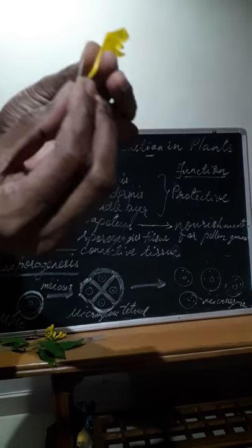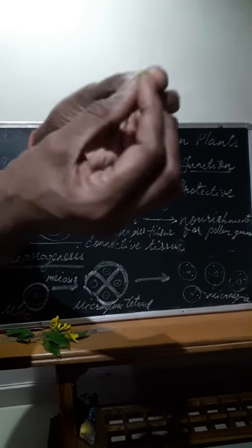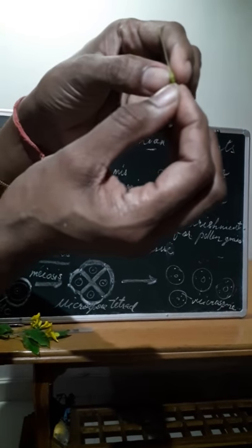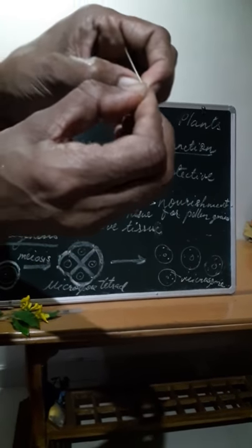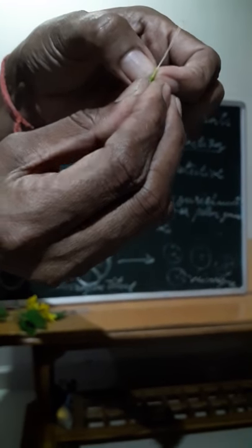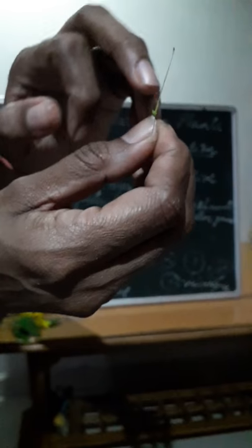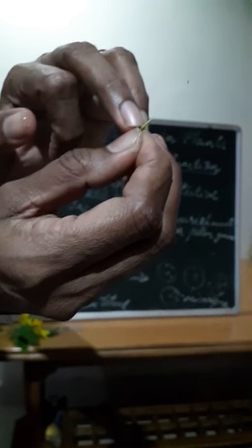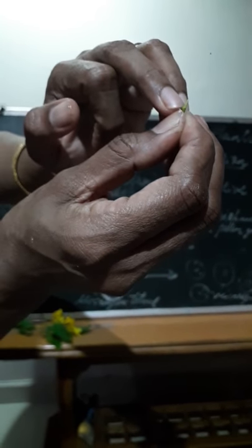All these four flower whorls are arranged in a disc-like structure. I am just showing that, here you can find that. Disc-like structure, what is it called? That is thalamus or receptacle.